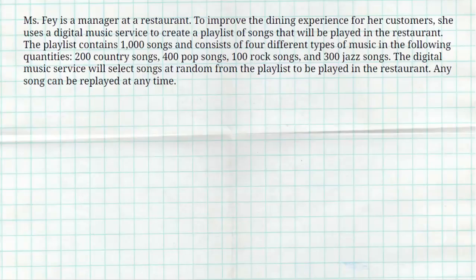Miss Faye is a manager at a restaurant. To improve the dining experience for her customers, she uses a digital music service to create a playlist of songs that will be played at the restaurant. The playlist contains 1,000 songs of four different types of music: 200 country, 400 pop, 100 rock, and 300 jazz songs. The digital music service will randomly select songs from the playlist to be played at the restaurant. Any song can be replayed at any time.